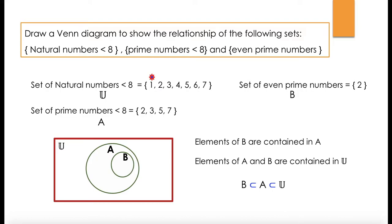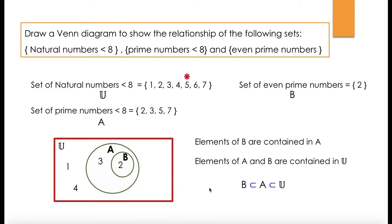Element 1 is only part of U, not part of A or B. Element 2 is part of U, A and B, so it goes into circle B which is already inside A. Element 3 is in U and A, so it goes in A outside B. Element 4 is only in U, so it goes outside the circles. 5 is in U and A, so it goes in A. 6 goes outside the circles. 7 is in U and A, so it goes within A and outside of B. This is how you write the elements to show the relationships.